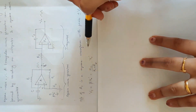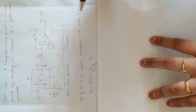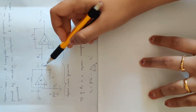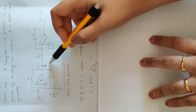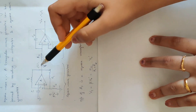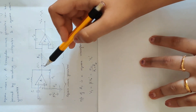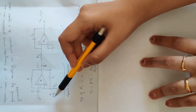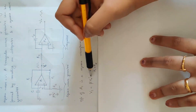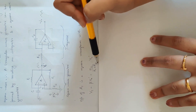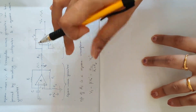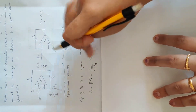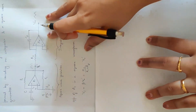The voltage at the non-inverting terminal: V1 equals beta into V0', that is R2 divided by (R1 plus R2) into V0'. This gives a brief idea of how the square wave generator works.